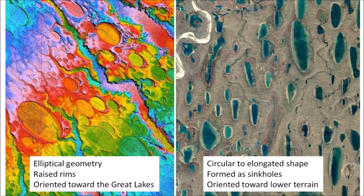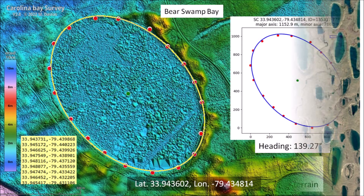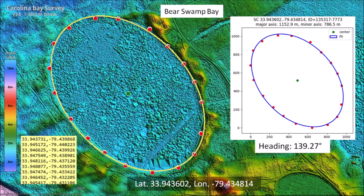Carolina Bays have mathematically elliptical geometry with raised rims, and they are oriented toward the Great Lakes. Thermokarst lakes have circular to elongated shape, they form as sinkholes, and they are oriented toward lower terrain. This is why it is important to fit ellipses by the least squares method to distinguish Carolina Bays from Alaska's thermokarst lakes. The Carolina Bays and thermokarst lakes may appear similar, but if they are not elliptical with raised rims and oriented toward the Great Lakes, they cannot be Carolina Bays.